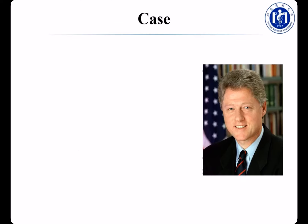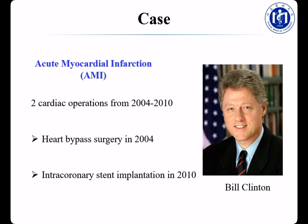Now let's get started with a case. Who is this man here? He is Bill Clinton — he used to be the President of America, and he is also a patient of acute myocardial infarction. To deal with it, he underwent two cardiac operations: heart bypass surgery in 2004, and intracoronary stent implantation in 2010.